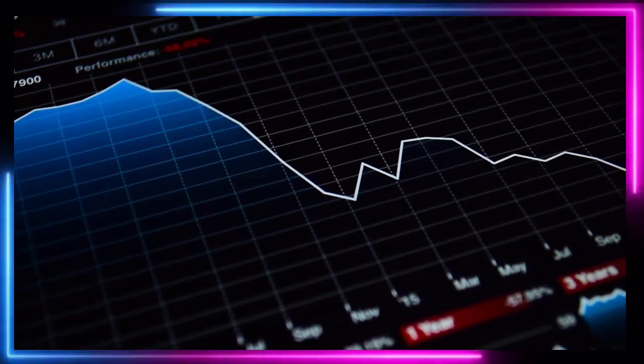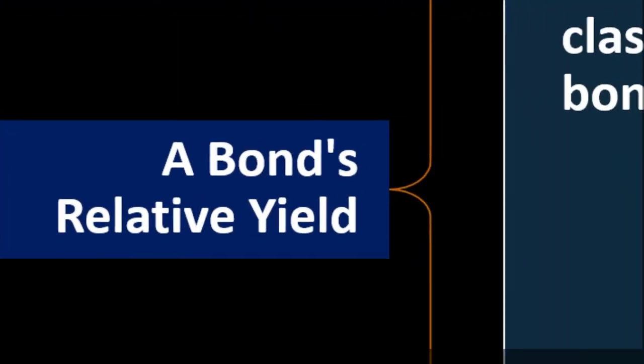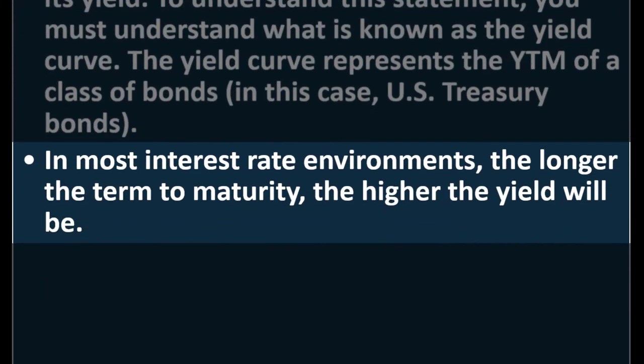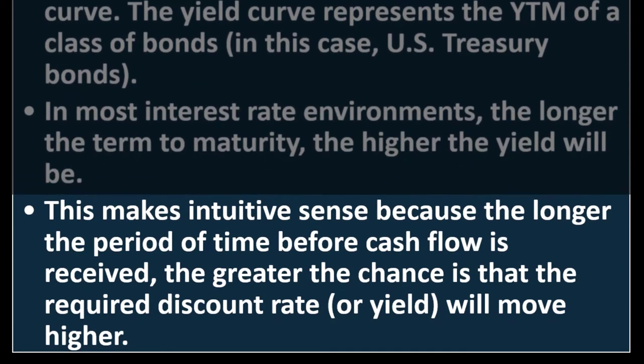A bond's relative yield is largely affected by its term to maturity. To understand this you must understand the yield curve, which represents the YTM of a class of bonds — in this case U.S. Treasury bonds. In most interest rate environments, the longer the term to maturity, the higher the yield, because the longer the time before cash flows are received, the greater the chance the required discount rate will move higher.